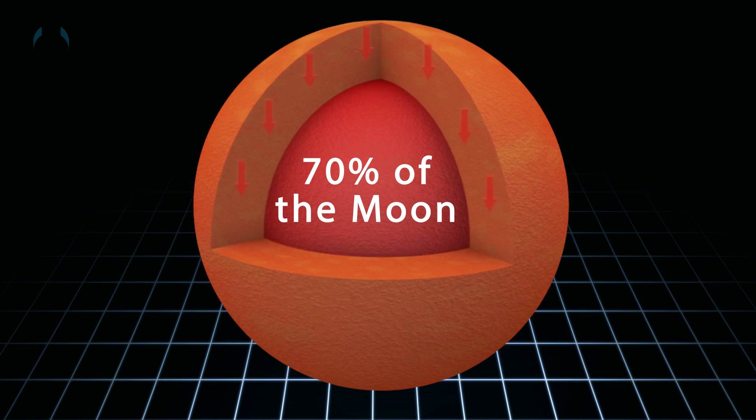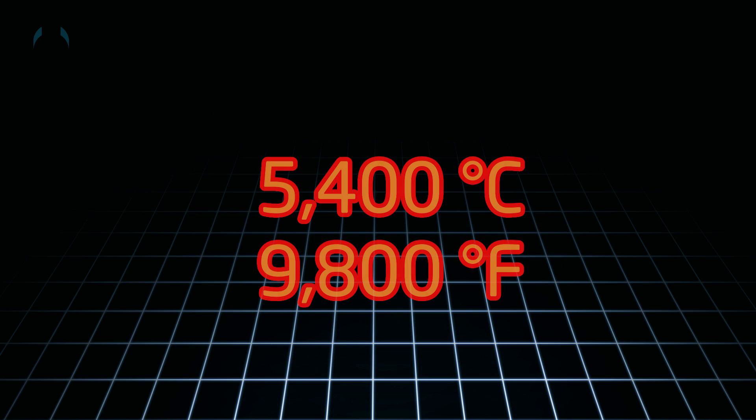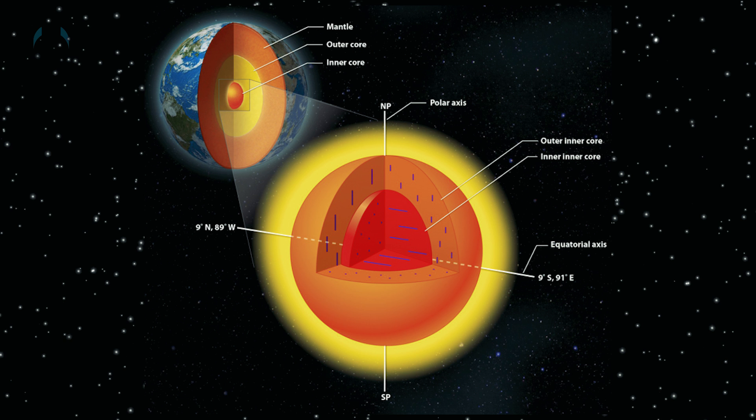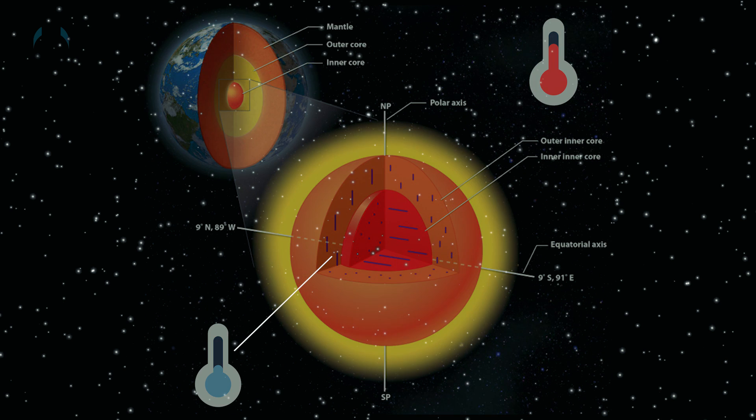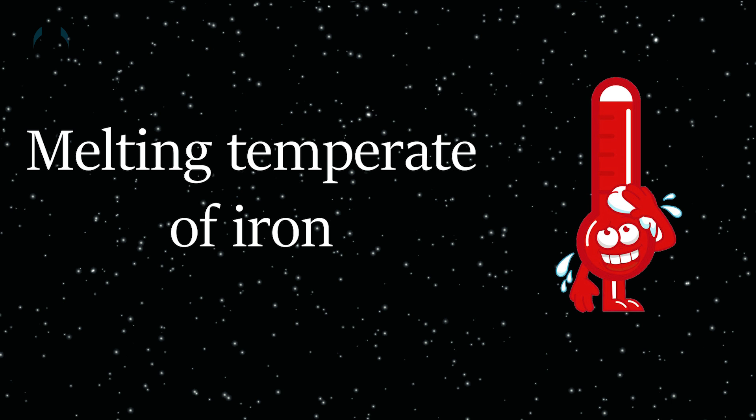To give you a better idea of its size, it is about 70% of our moon's diameter. It is very hot with a temperature of 5,400 degrees Celsius. It is important to point out that while the temperature of the inner core is hotter than the outer core, the pressure is so great on the inner core that the melting temperature of iron actually increases.